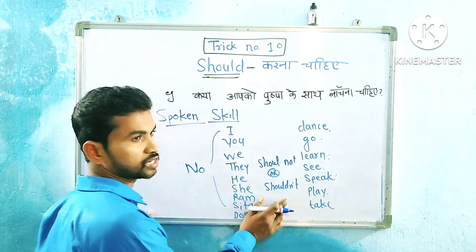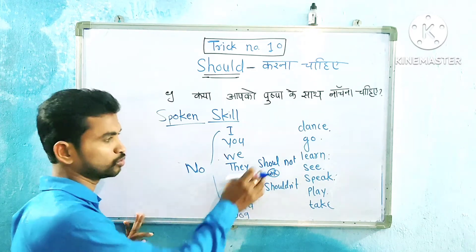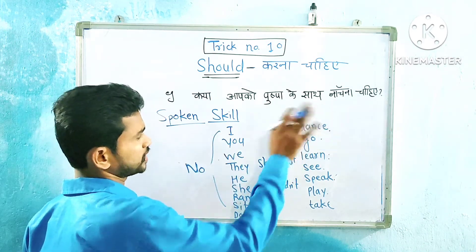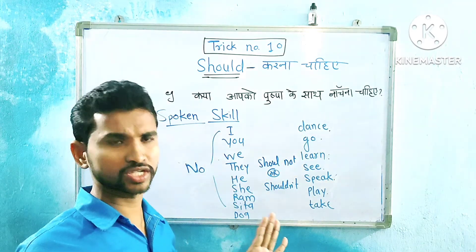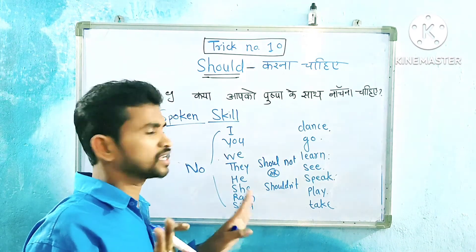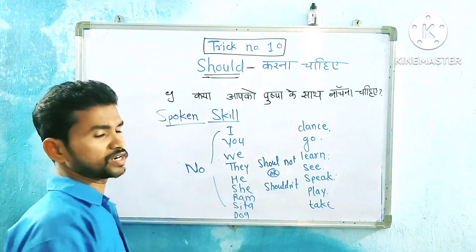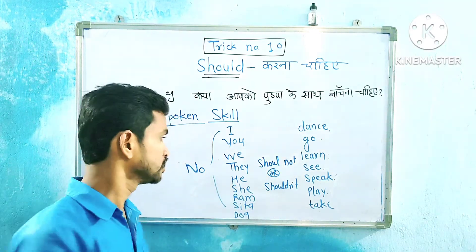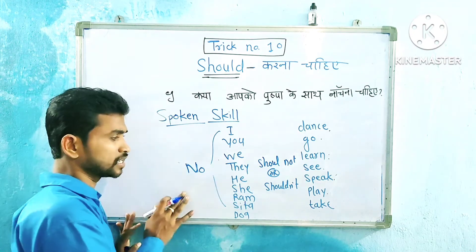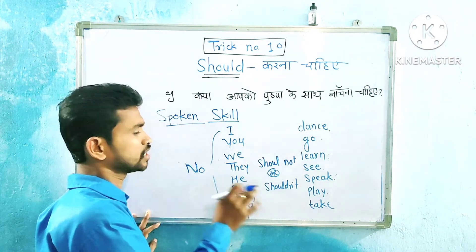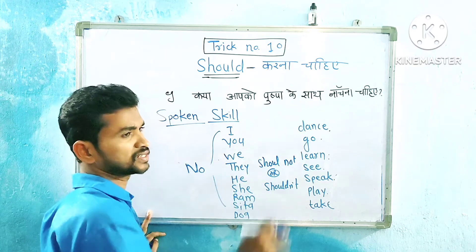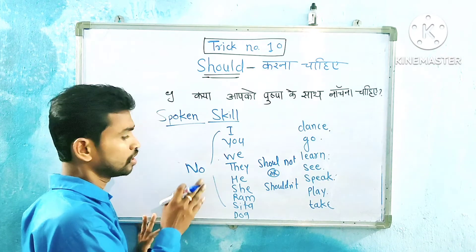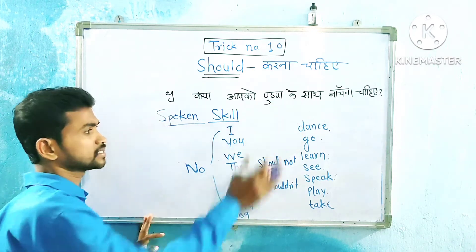Now for negatives: 'Should not' or 'shouldn't.' You should not dance. No, she should not dance. No, Ram should not dance. No, she should not dance. No, dog should not dance — 'kutta ko dance nahi karna chahiye.' Practice the negative form with every subject.